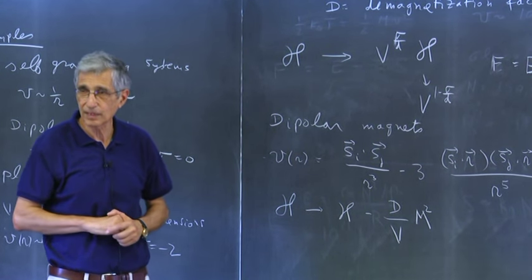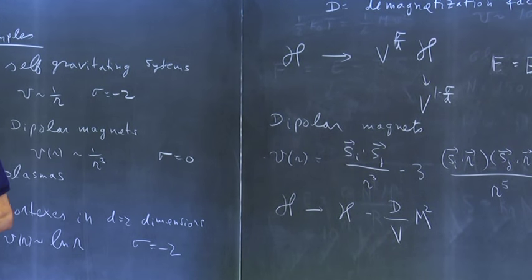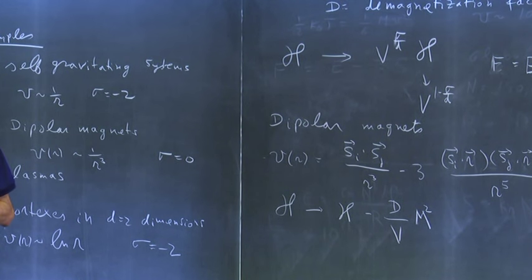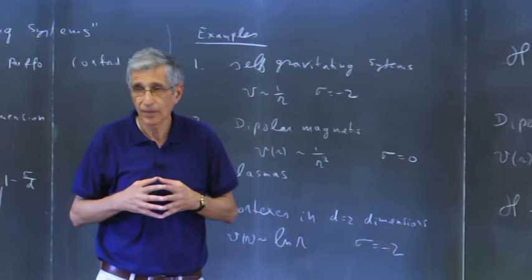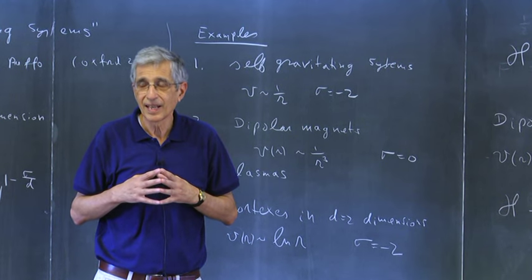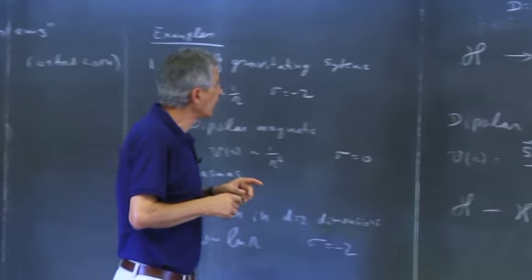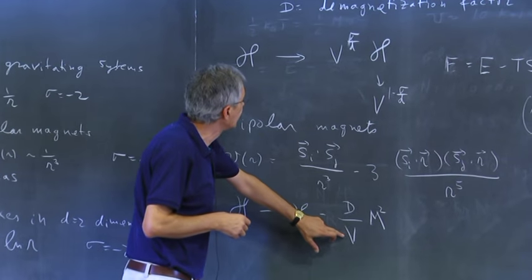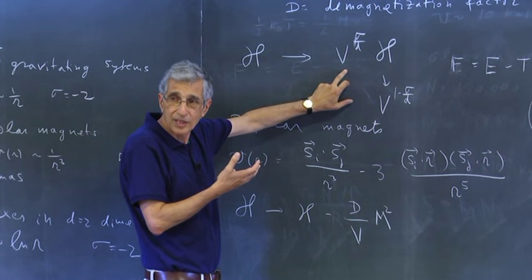The magnetization M scales like the volume — it's the total magnetization. So the second term in the Hamiltonian increases with volume squared divided by volume, giving a volume-scaling term. The shape dependence enters through D. All I'm saying is that this kind of rescaling appears naturally here, and since the energy depends on the shape of the sample, that's where the borderline between long-range and short-range shows up.